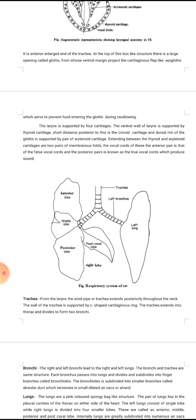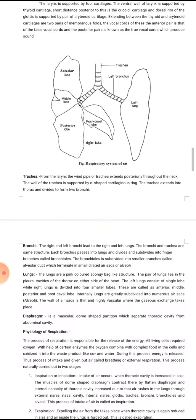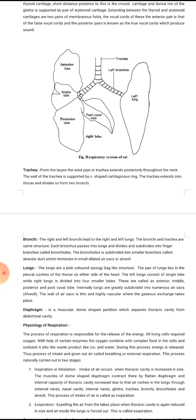The trachea extends into the thorax and divides to form two bronchi — right bronchus and left bronchus. The bronchi are connected to both sides of the lungs.